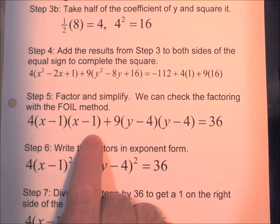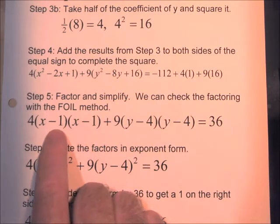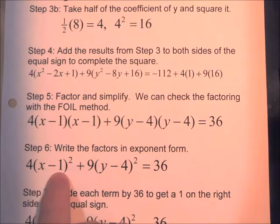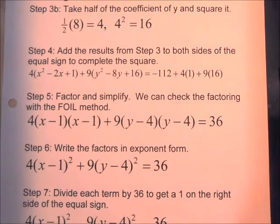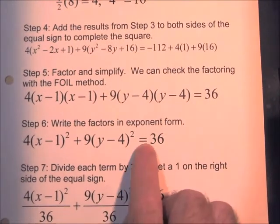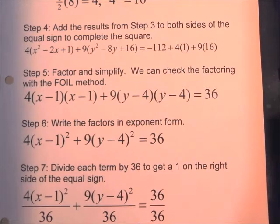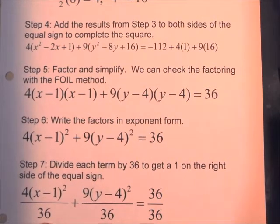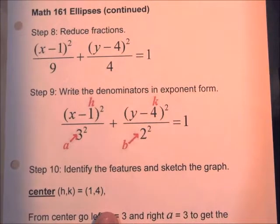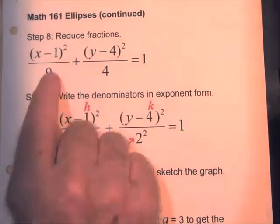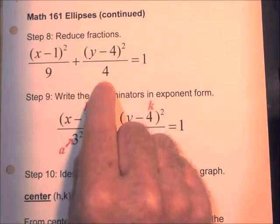We write these in exponent form: the quantity x minus 1 squared, times 4, plus the quantity y minus 4 squared, times 9, equals 36. Since the standard form requires equals 1, we divide each term by 36. Simplifying: 4 over 36 reduces to give 9 in the denominator; 9 over 36 gives 4 in the denominator; and 36 over 36 is 1. This gives us: x minus 1 quantity squared over 9, plus y minus 4 quantity squared over 4, equals 1.